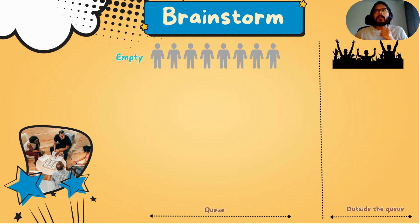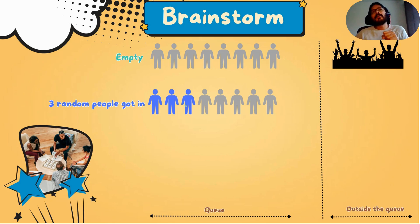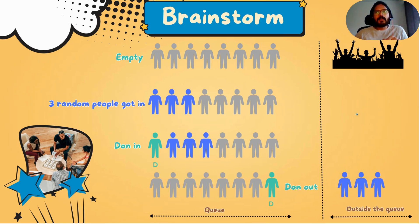Let's look at the example. Initially, the queue is going to be empty. And to make it more interesting, let's say three random people go into the queue. Let's call them blues. And then Don gets into the queue. And eventually, three blues would go out. And when that happens, I'm expecting Don to come out of the queue. Now, how do I figure out that everybody in front of Don has gone out of the queue?